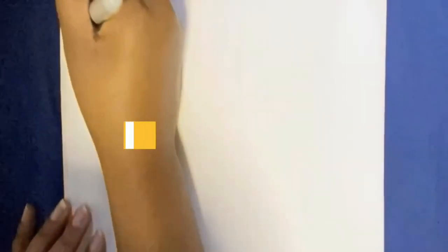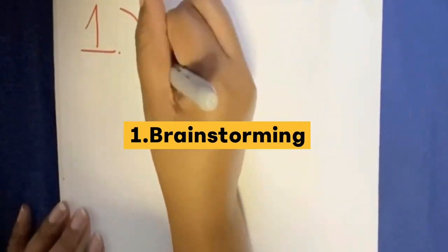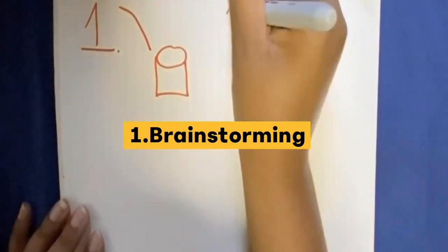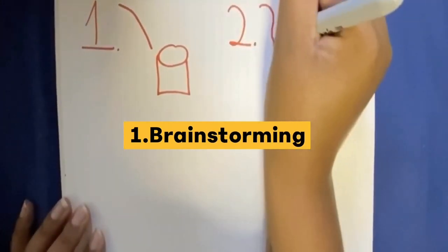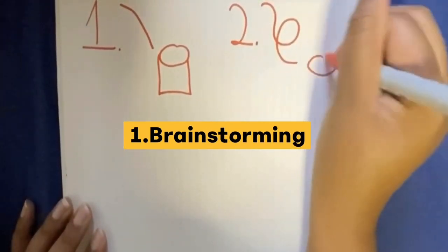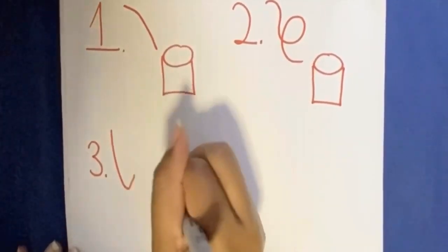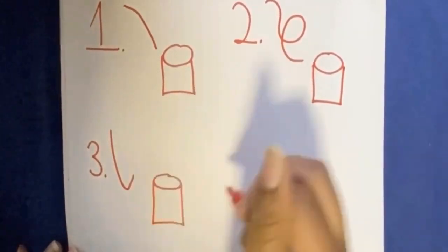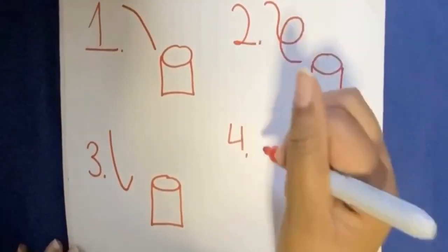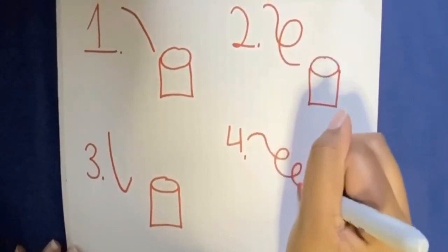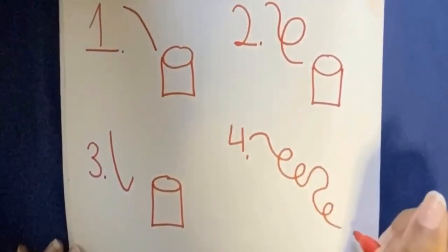For our first step, we have provided three examples of roller coasters: a straight roller coaster, a loop-de-loop, a ski jump, and for the fourth one, we'll let you get creative and do whatever you like.